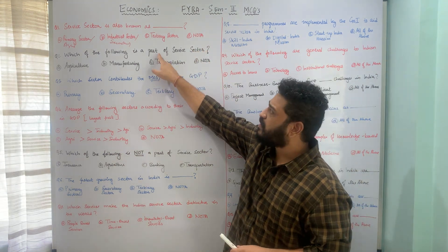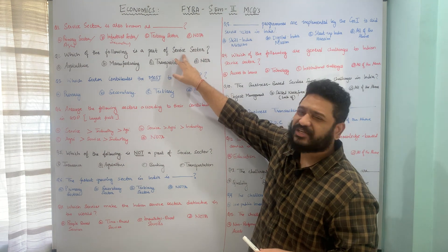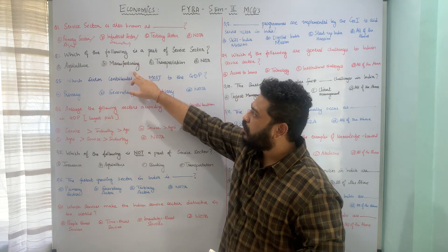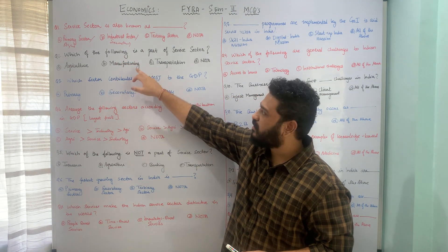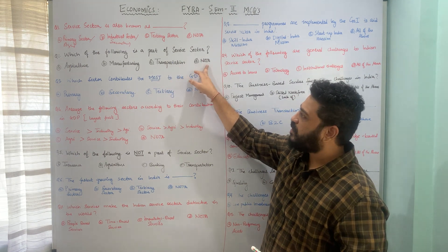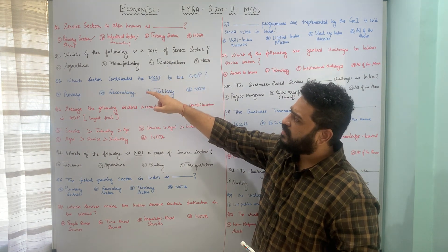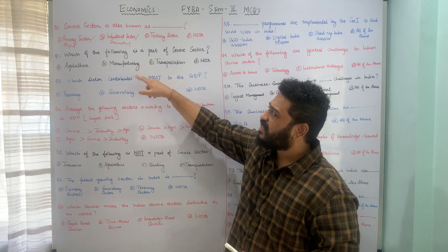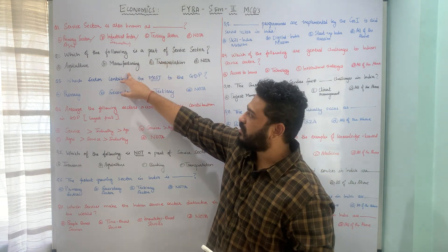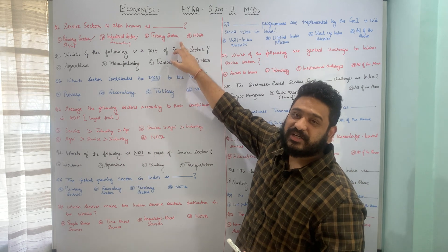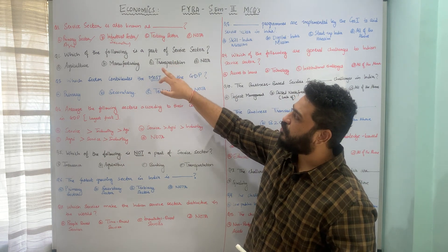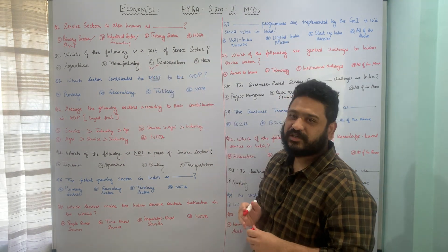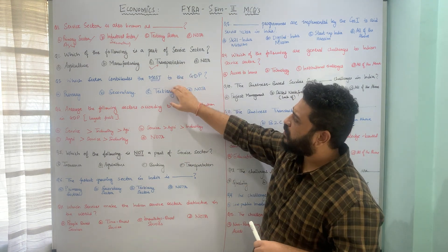Which of the following is a part of service sector or tertiary sector? Option A is agriculture, option B is manufacturing, option C is transportation, option D is none of the above. Option A, agriculture, relates to the primary sector. We are specifically asking which of the following is a part of service sector, so option C, transportation, is the correct answer to this question.